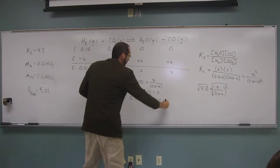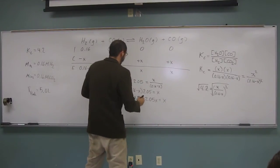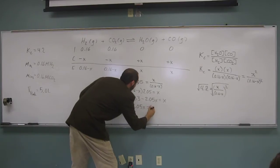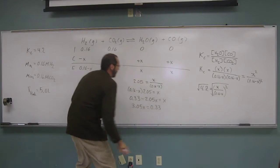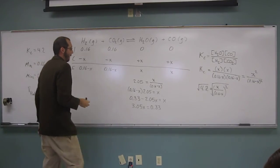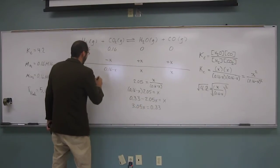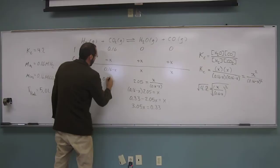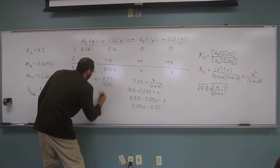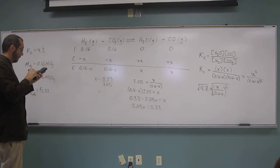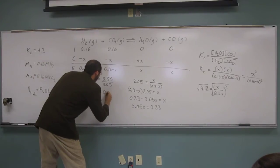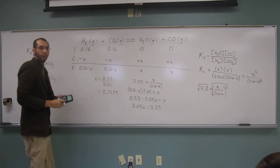so 0.33 minus 2.05x equals x. Okay, so move this over to the other side. So this is going to be 3.05x equals 0.33, like that. And then figuring out x, x is going to be 0.33 divided by 3.05. And that should give us, okay, so I get 0.11 molar for x.